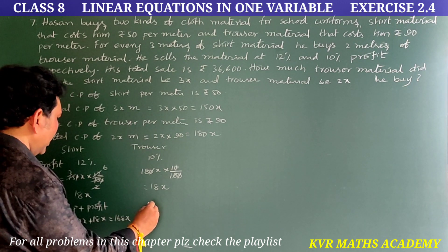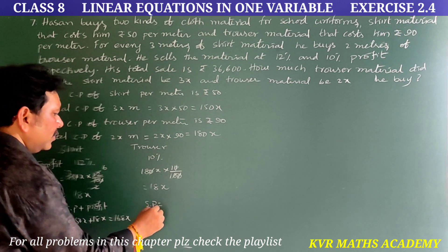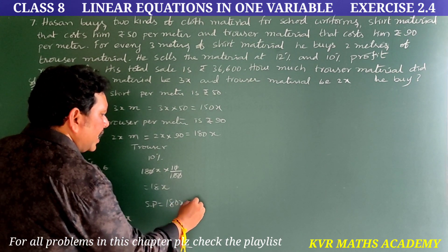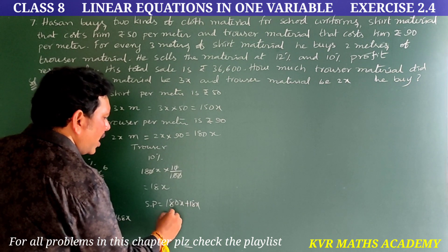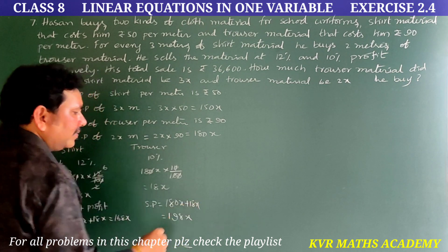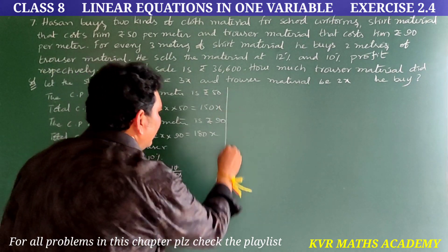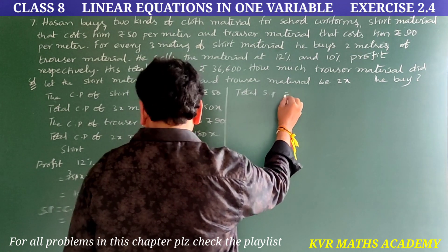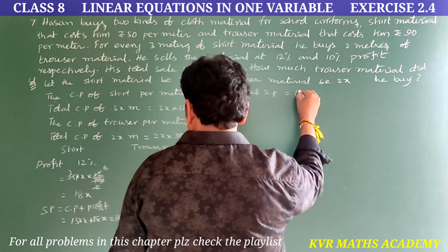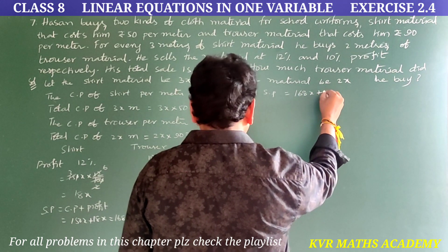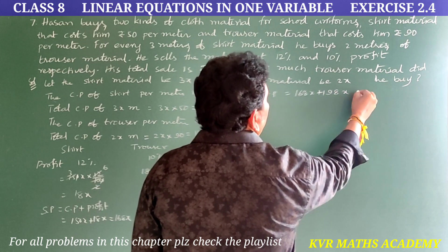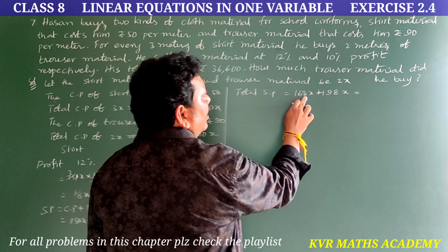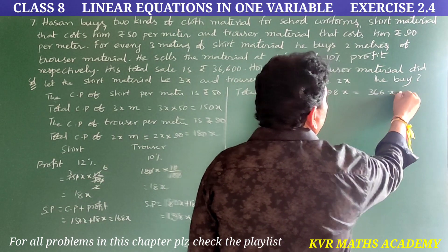SP equals CP plus profit. For short material: SP is 150x plus 18x, which equals 168x. For trouser material: SP is 180x plus 18x, which equals 198x. Total SP is 168x plus 198x, which equals 366x.